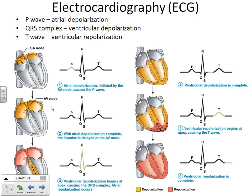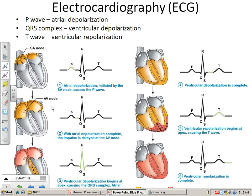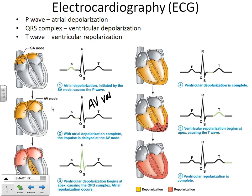The AV valves — your tricuspid and your mitral — are both atrioventricular valves. The AV valves have to be open during atrial contraction. Would our semilunar valves be open or closed at this point? They're closed. The blood is going from the atria to the ventricles, and we don't want it leaking out of the ventricles slowly — we want to pull it into the ventricles so we can contract and shoot it out with force. So the SL valves are closed.